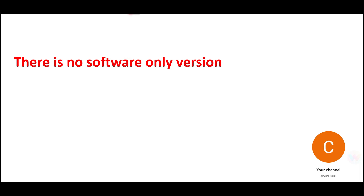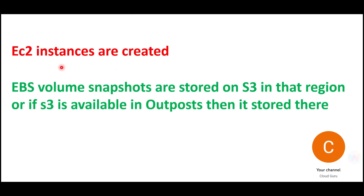For EC2 instances created in Outpost, underneath there is an EBS volume. EBS snapshots can be stored on S3. There are two options: if you have S3 configured in your Outpost and have a data residency requirement where data cannot leave the premises, store snapshots there. If data can move outside, store them on S3 in the master AWS region.